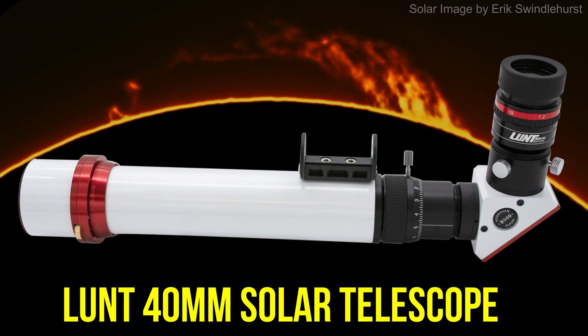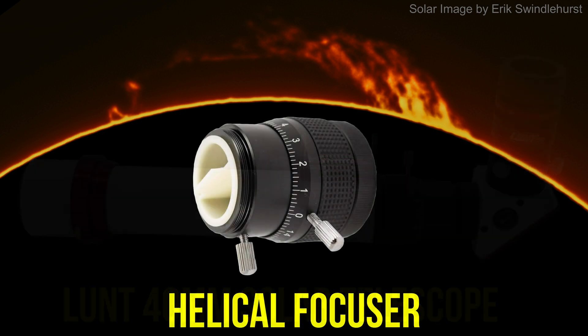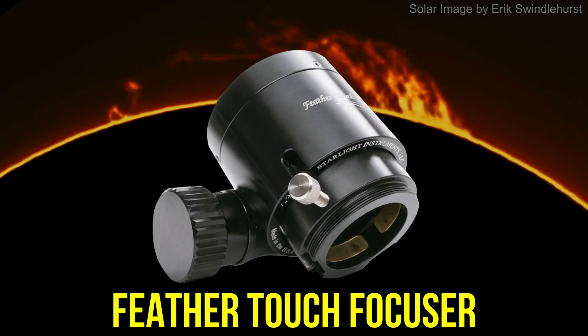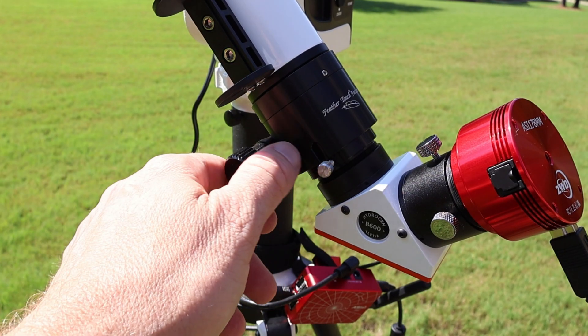The Lunt 40mm Solar Telescope comes with a non-rotating helical focuser. This focuser has 10mm of precision travel, a brass compression ring for protection of your eyepieces, and a locking collar. When I purchased my solar telescope, I upgraded the focuser to the 1.25 inch Feather Touch Focuser. I'm glad I did.